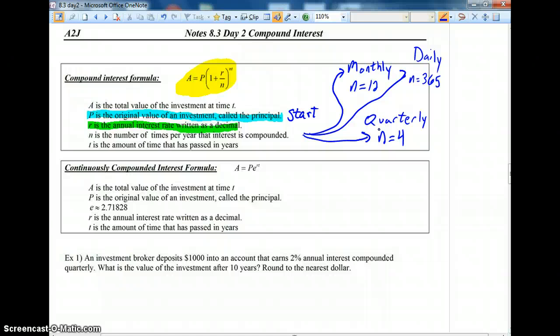You might have monthly interest. You might get a bank statement every month with some interest accumulated and that would be n equals 12. More rarely, you might get interest daily, 365 days in a year. So in that case, n would equal 365.